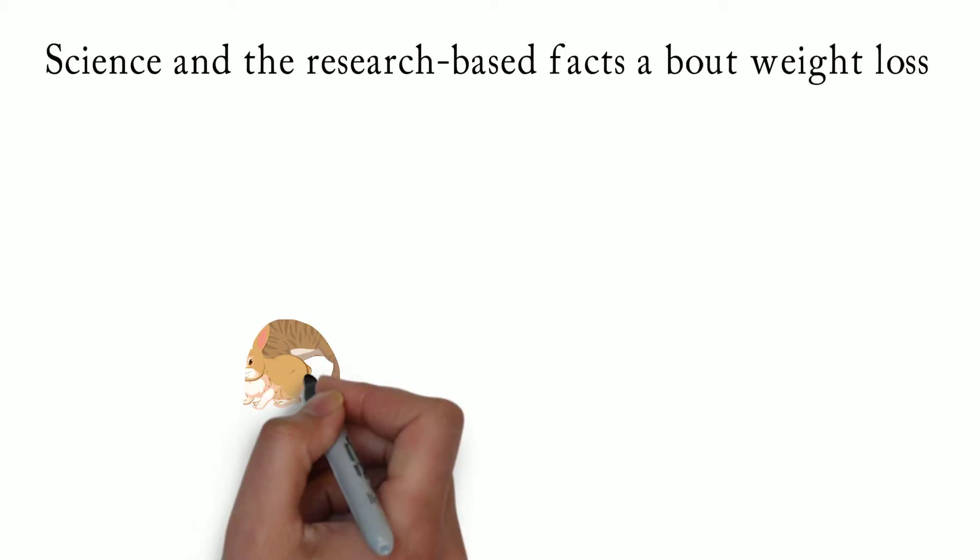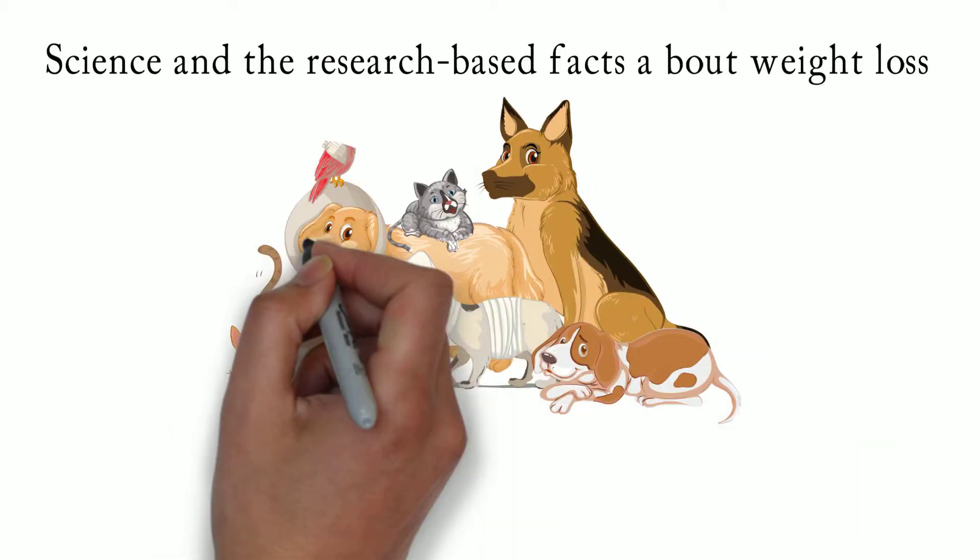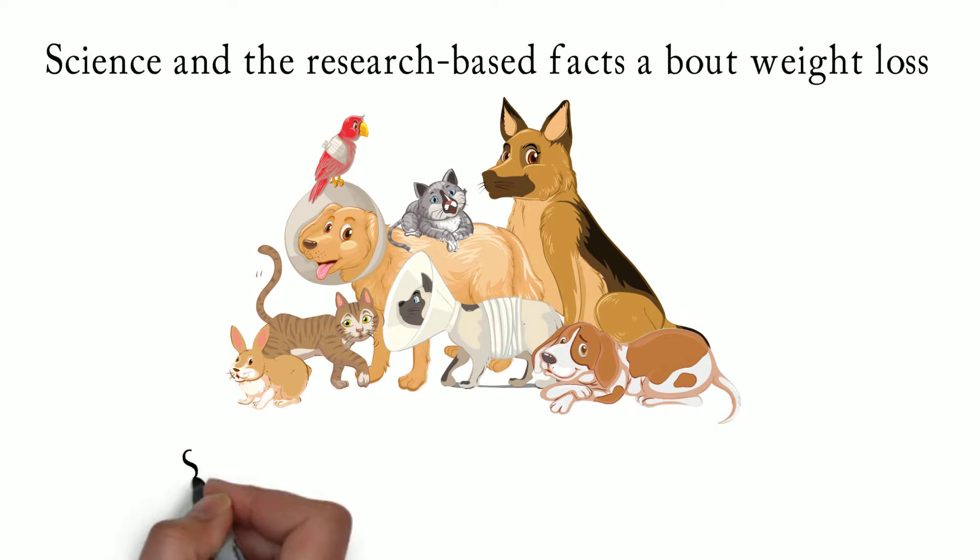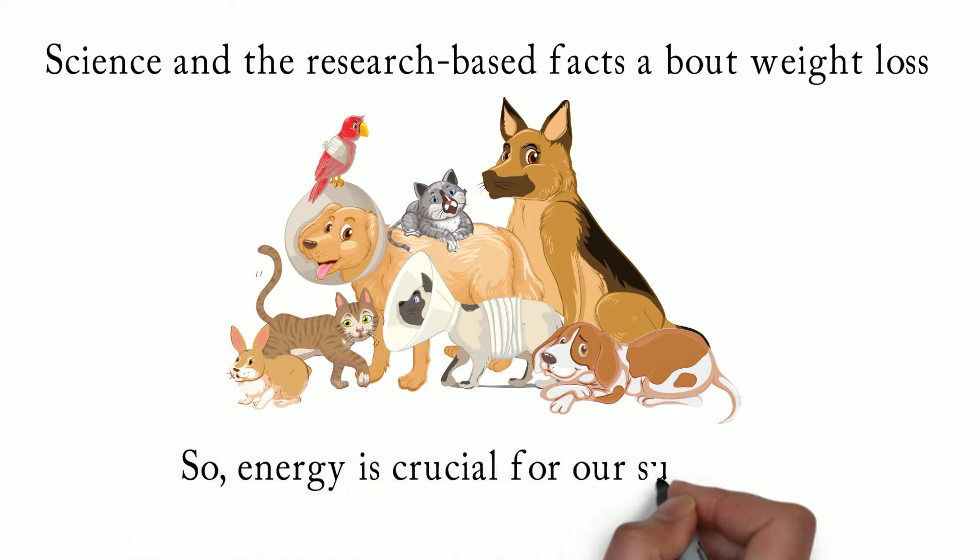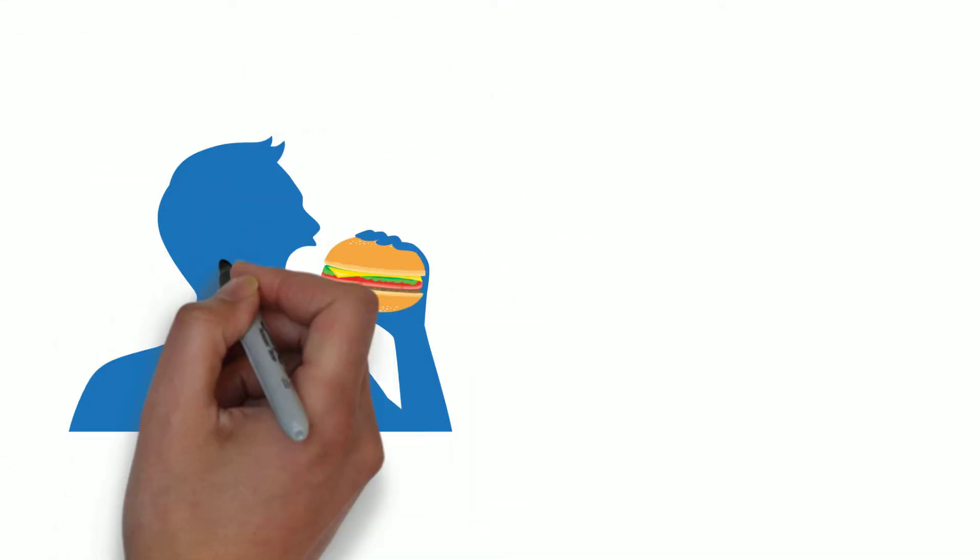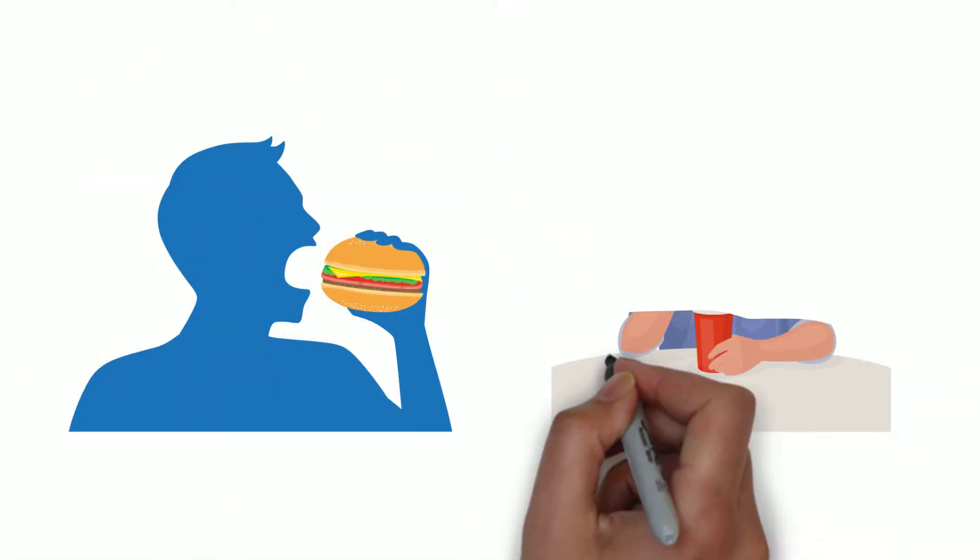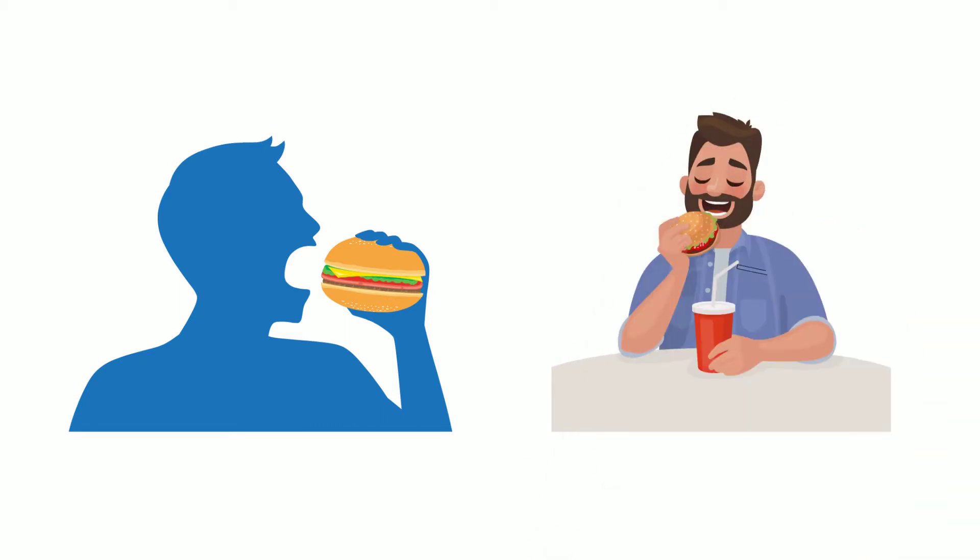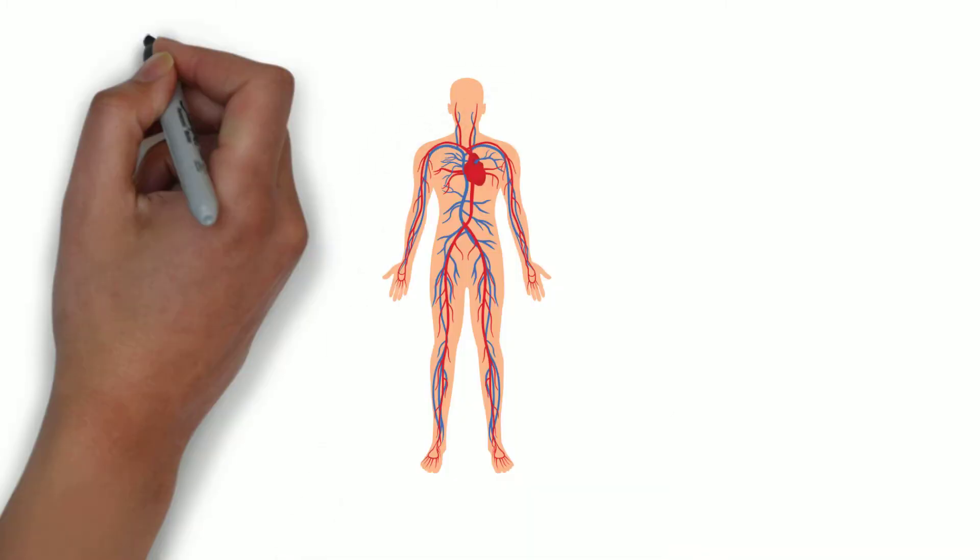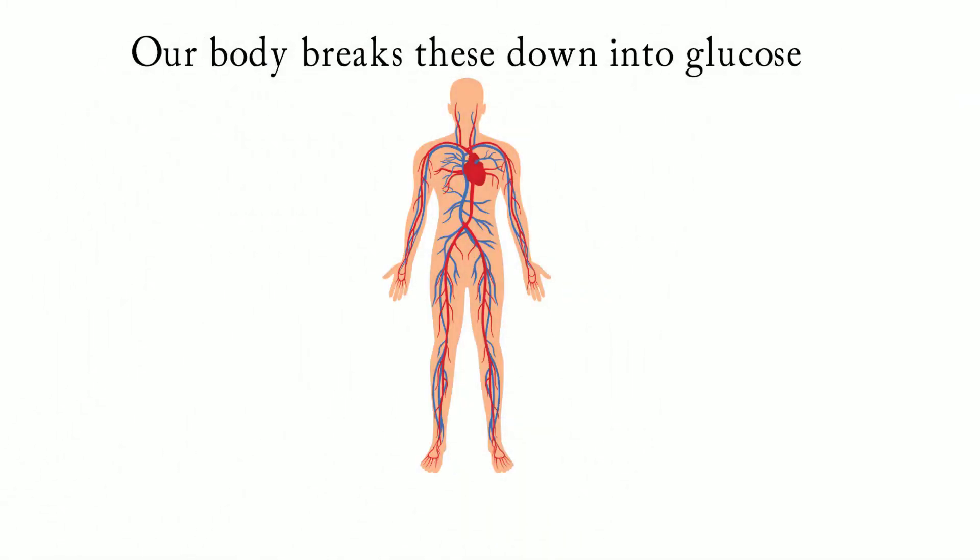First we must acknowledge that all living beings need energy to survive and live. So energy is crucial for our survival. We take energy from food. Food is the only source of energy for us. Food gets converted to energy and delivered to all the body. Our body breaks these down into glucose, which is the easiest fuel for our cells to burn. We're going to call this energy in.